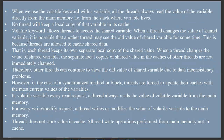When we use the volatile keyword with a variable, all the threads always get the value directly from the main memory — from the stack where the variable resides. We already said that it directly reads the values from the main memory. No thread will keep a local copy of the variable in its cache. The value of the volatile keyword can be changed at any time without any action being taken by the compiler or object.